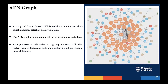Now we're going to talk about the AEN graph. AEN is short for Activity and Event Network, which is a model previously developed at University of Victoria. It's a new framework for threat modeling, detection, and investigation. It's a multi-graph with a variety of nodes and edges, and it's just growing bigger and bigger as the network grows. It processes a wide variety of logs — for example, network traffic files, system logs, DNS data — and based on all these inputs, it builds and maintains a graphical model of the network behavior.